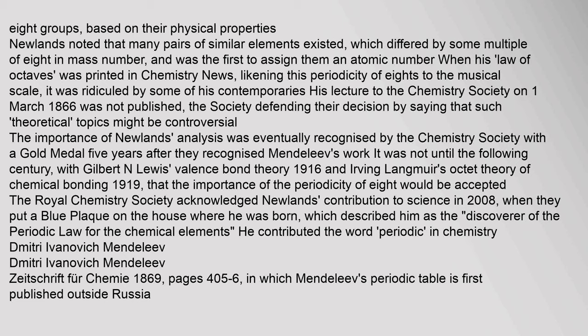The importance of Newlands's analysis was eventually recognized by the Chemistry Society with a gold medal, five years after they recognized Mendeleev's work. It was not until the following century, with Gilbert N. Lewis's valence bond theory (1916) and Irving Langmuir's octet theory of chemical bonding (1919), that the importance of the periodicity of eight was accepted. The Royal Chemistry Society acknowledged Newlands's contribution in 2008 by placing a blue plaque on his birthplace, describing him as the discoverer of the periodic law for the chemical elements.